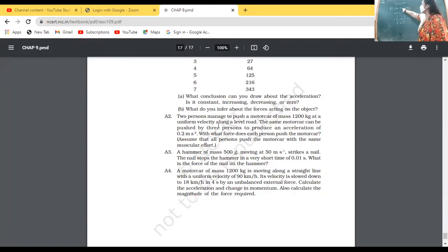F is equal to MA, and put the formula of A also in the same so we have all the things together: M, V, U, T, and F. Directly we can use this formula. Mass should be in kilogram divided by 1000, so half kg is the mass. V is 0, U is 50, time is 0.01. Half into minus 50 into 100 gives minus 2500 newtons.